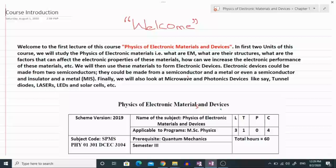And how can we increase their electronic performance? Then we will use these materials to form electronic devices. Electronic devices could be made from these materials using many ways. Electronic devices could be fabricated by using two semiconductors, by using one semiconductor and one metal, or even by using one semiconductor, one insulator and one metal. This type of electronic device is known as metal-insulator-semiconductor devices.